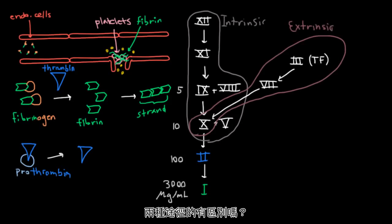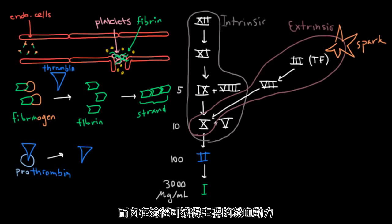So what's the difference between these two pathways? Well, it turns out that the extrinsic pathway is the spark. It's the one that gets activated by the original insult over here, whereas the intrinsic pathway is kind of like the workhorse that really gets most of the coagulation done.